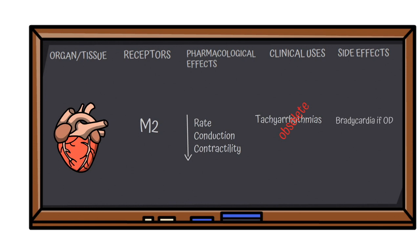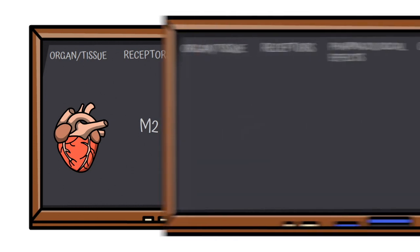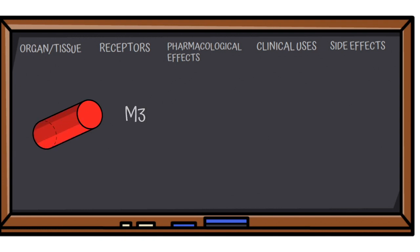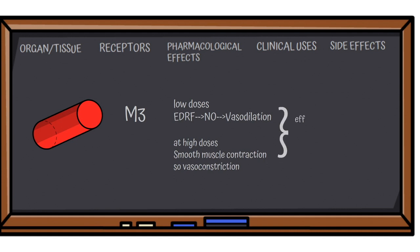They can cause bradycardia if overdosed. Blood vessels also have M3 receptors, but interestingly, low doses will act on the endothelial M3 receptors and cause release of nitric oxide which causes vasodilation, whereas high doses will cause smooth muscle contraction by stimulation of M3 receptors in the smooth muscles and vasoconstriction will occur.